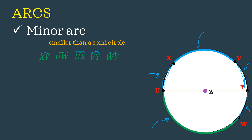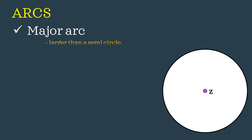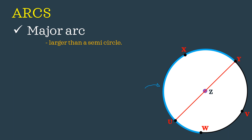If minor arc is smaller than a semicircle, then something bigger than a semicircle is called a major arc. A major arc is always named using three letters and we use the symbol for arc. Here we name it as arc WUY, or we may also name it as arc WXY. It is up to us which point we use in between W and Y, which are the endpoints of our arc.